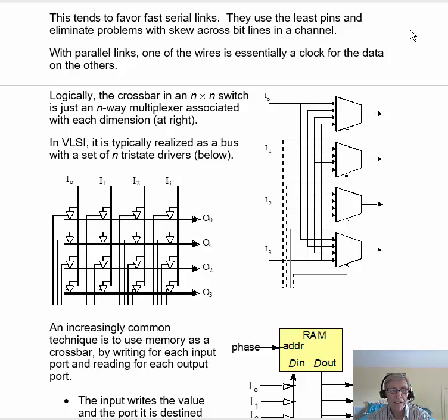Logically, this crossbar in an n-by-n switch is just an n-way multiplexer associated with each dimension. In other words, you have n inputs, and then you have the control signals that tell you which input to send to the output. In VLSI, it's typically realized as a bus with a set of n tri-state drivers like this.